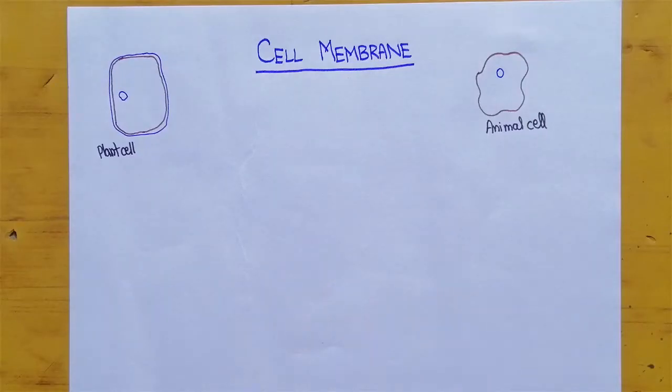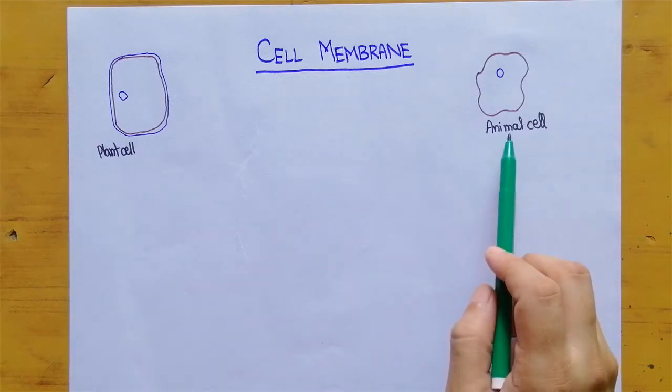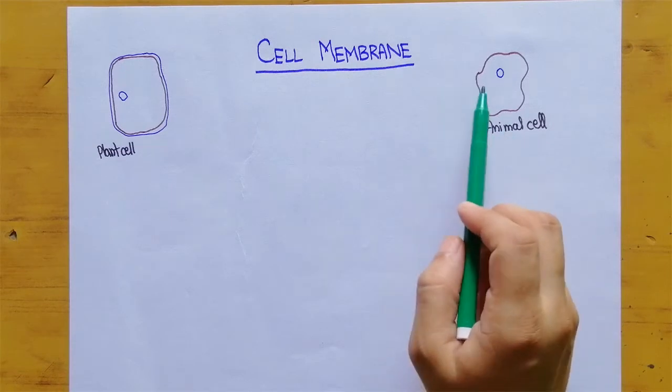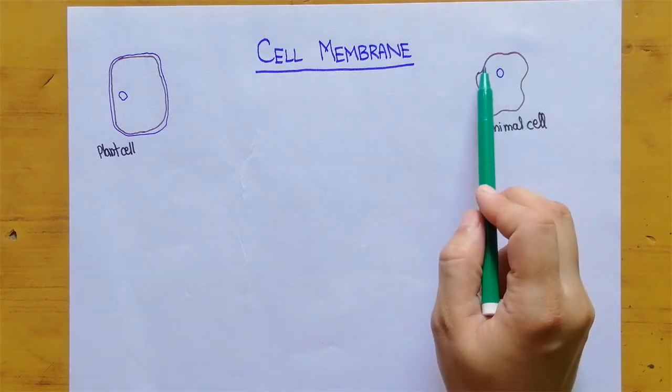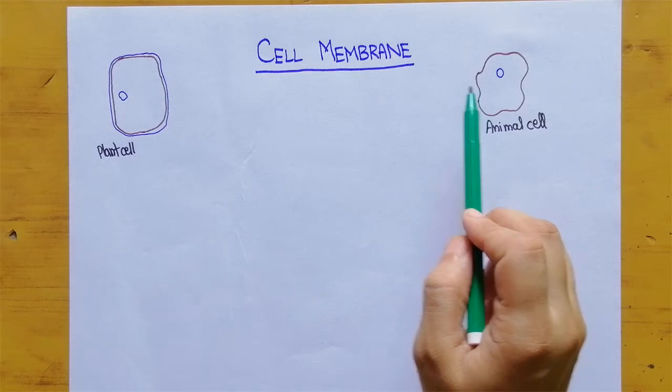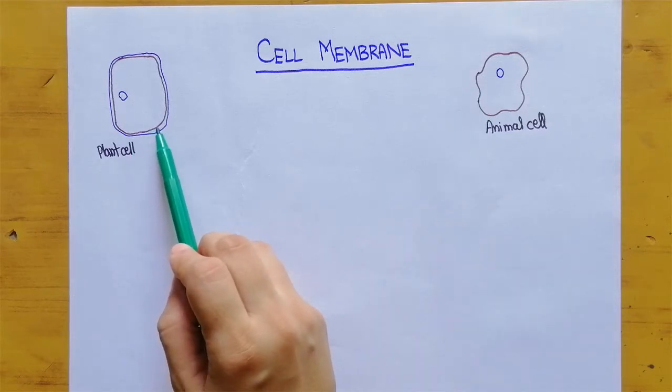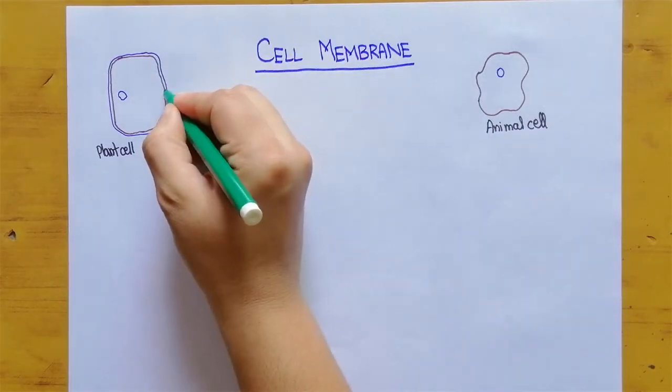Today we are going to talk about cell membrane. In our previous lessons we have already studied about the structure of plant and animal cell and we know that outer covering of animal cell is made up of cell membrane while the second layer in the plant cell is known as cell membrane.